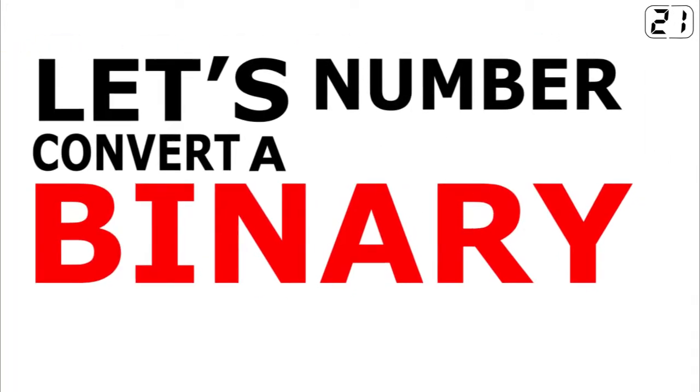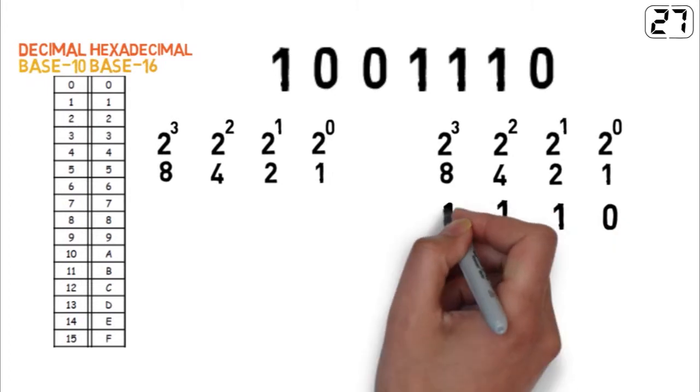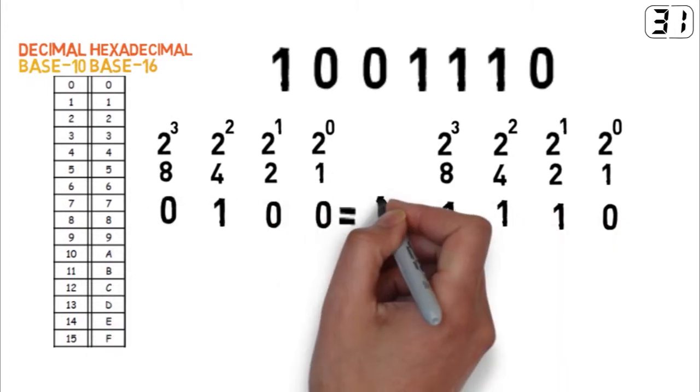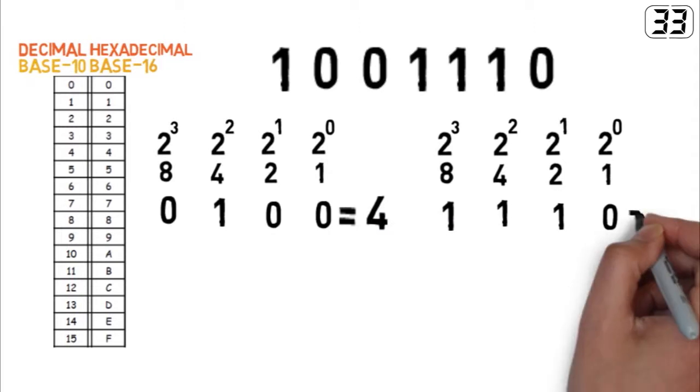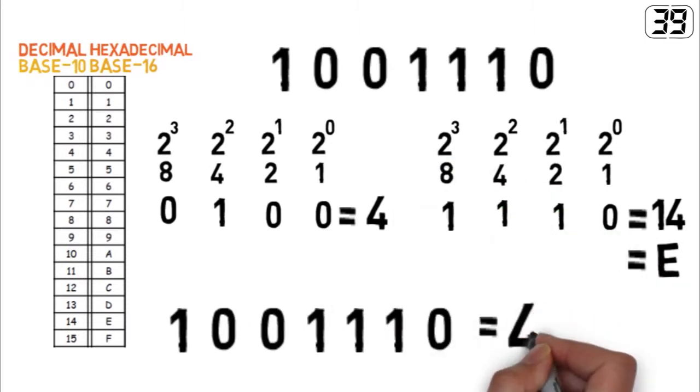Let's convert a binary number into hexadecimal. Split the binary number into groups of 4 digits. If you need to, add zeros to the left hand side to give a multiple of 4. 0 1 0 0 equals 4, 1 1 1 0 equals 14, which in hex is e, so the answer is 4e.